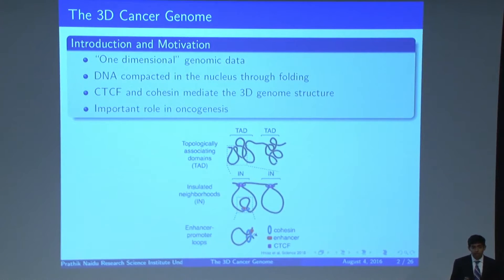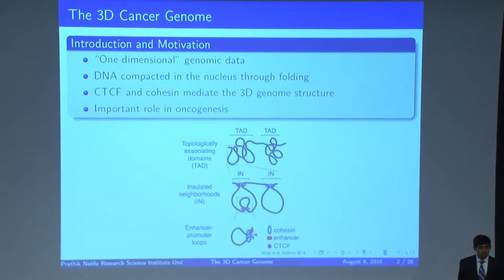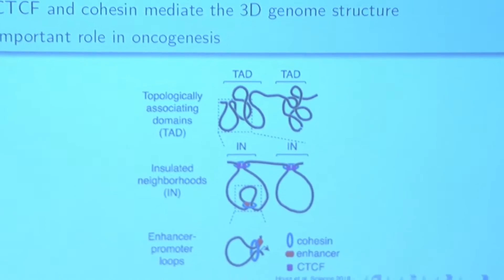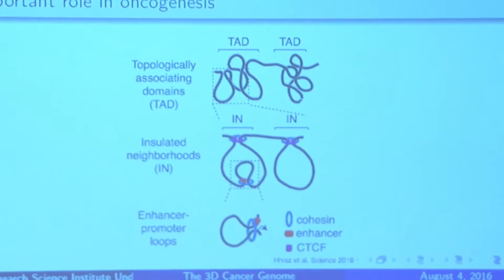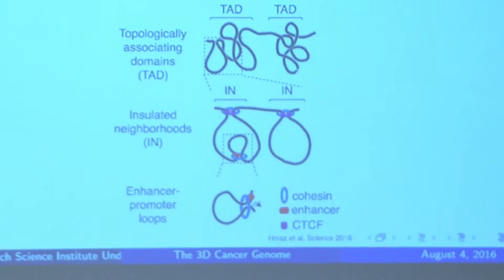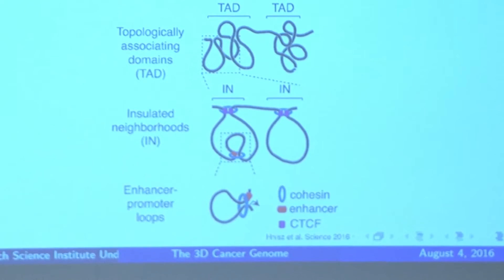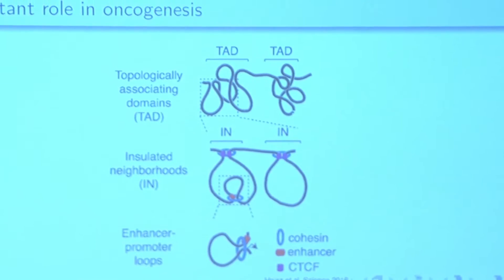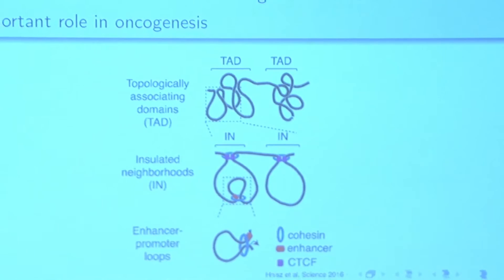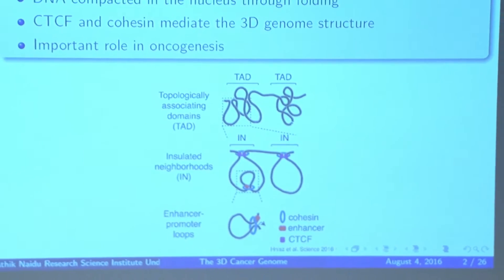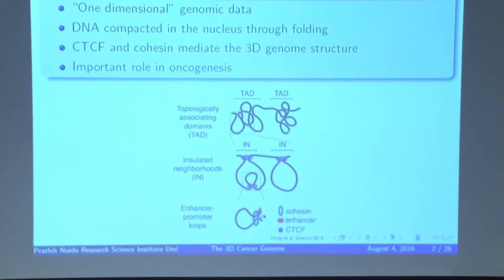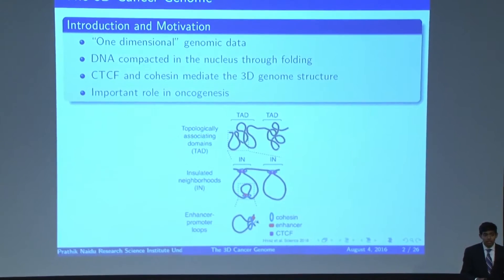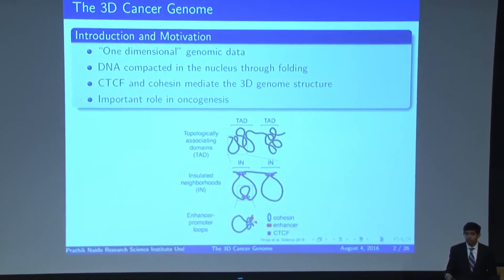CTCF is a protein that binds to certain regions of the DNA and mediates this 3D genome structure. It works by binding to DNA and coming together to form DNA loop structures. The reason why these loops are important is because in normal cells, they hide individual oncogenes. However, in cancer cells, these loops are disrupted, allowing these oncogenes to be released, activated, and allowing the cancer itself to thrive.